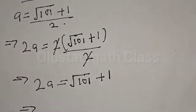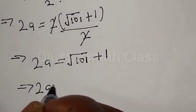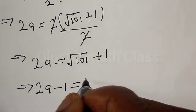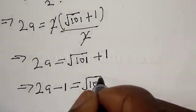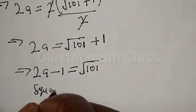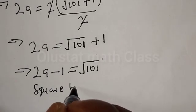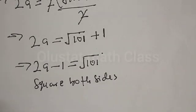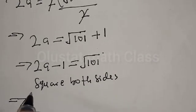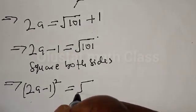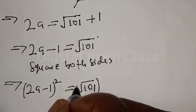Then, this implies that 2a minus 1 will be equal to square root of 101. Now let's square both sides. This implies that 2a minus 1 squared is equal to square root of 101 squared.